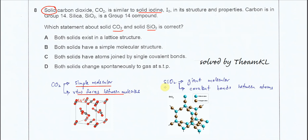SiO2 is giant molecular structure, and there are covalent bonds between the atoms, the Si, the silicon and oxygen atoms in the covalent networks like this.